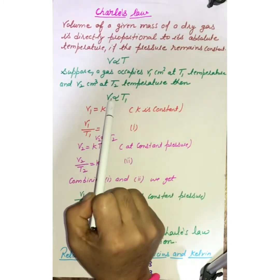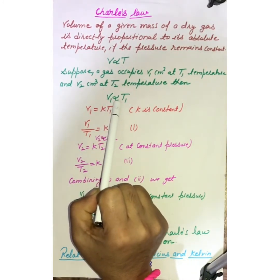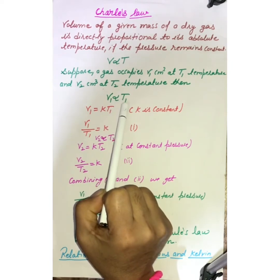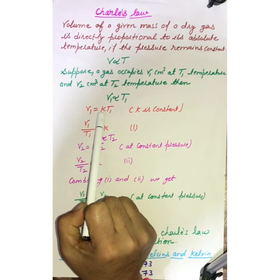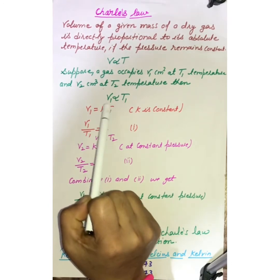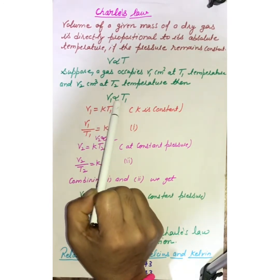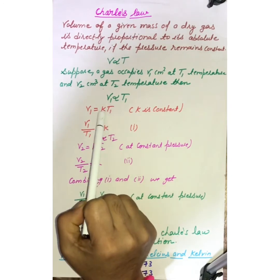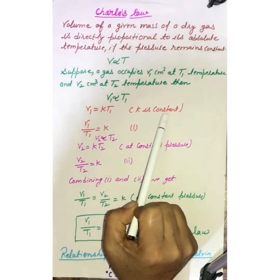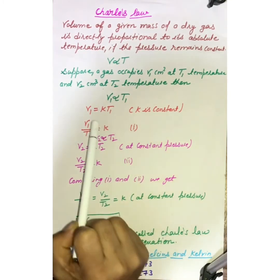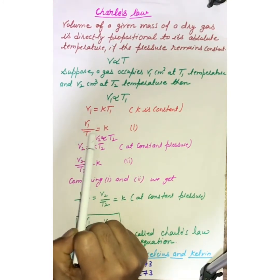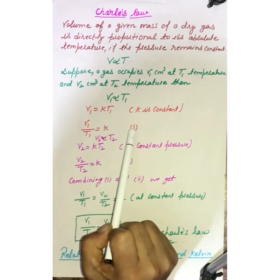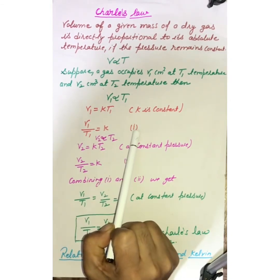So, but this expression will become V1 is directly proportional to T1. Here, V1 equals to K into T1. What is this K? K is proportionality constant and here the student K is constant. And this expression will become V1 upon T1 equals to K. Here you will put equation number 1.